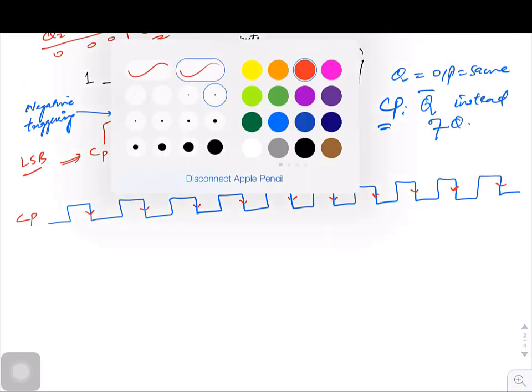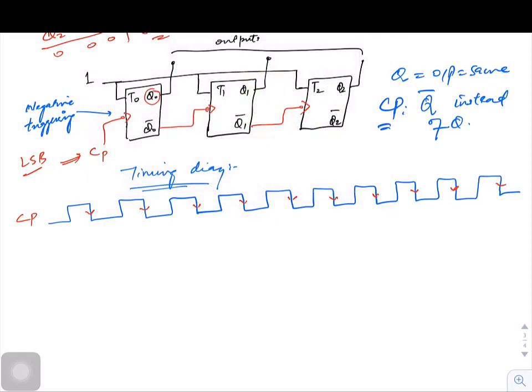Since this is related to Q0, we are ready for Q0. Q0 is going to toggle the value from zero to one and one to zero wherever your clock pulse is moving from one to zero. So this is your Q0.